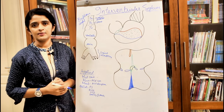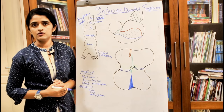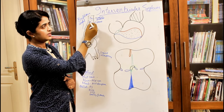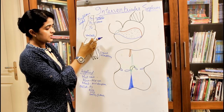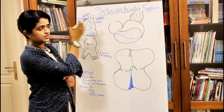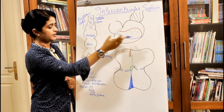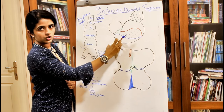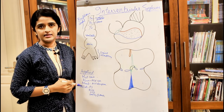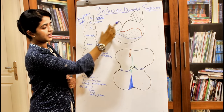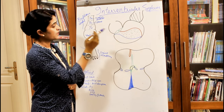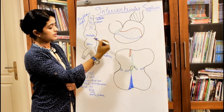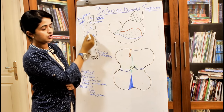Now let's see how the interventricular septum is evolved. Focusing on the atria, ventricle, and bulbus cordis region — the atria gets folded and seated above, while the ventricle is shifted to the lower part, which is actually the position of the adult heart. So the atria is pushed above and the ventricle is brought down, giving us the primitive ventricle and primitive atria.